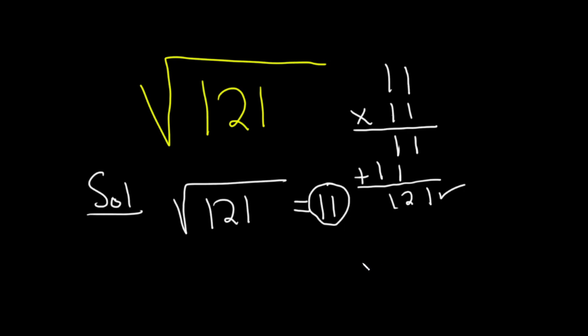11 times 11, so 11 squared is equal to 121. Therefore the square root of 121 is equal to 11. Kind of a fun problem, and it's one that is definitely worth memorizing. I hope this video has been helpful. Good luck.